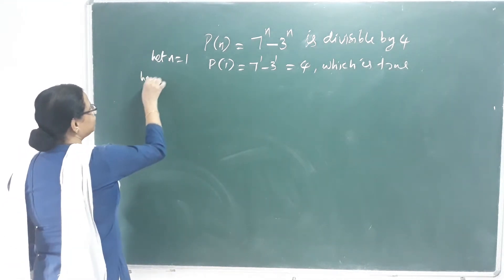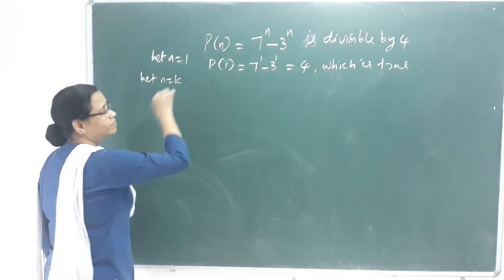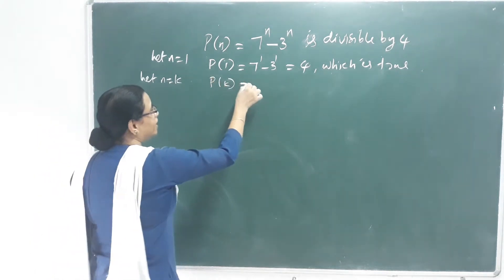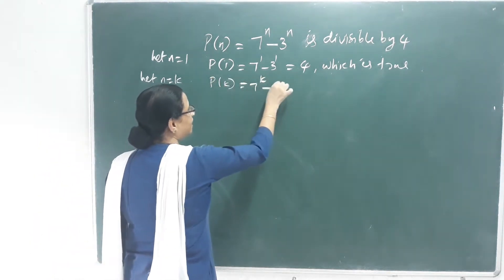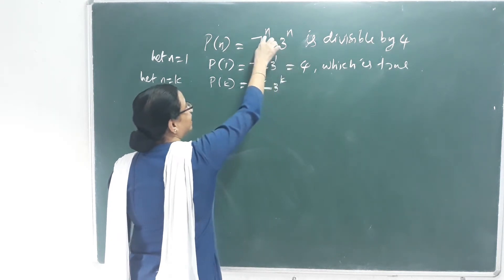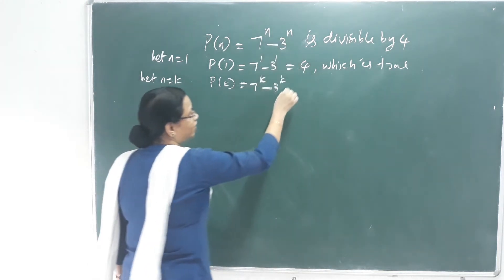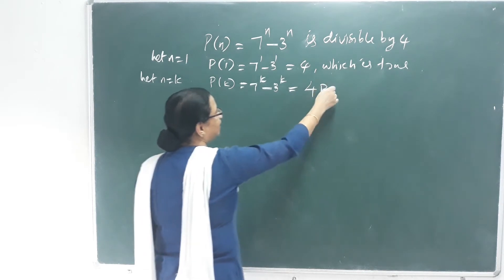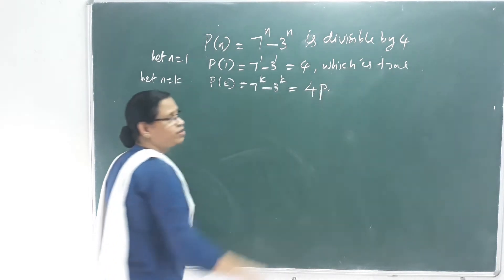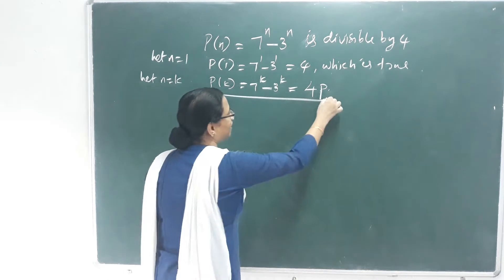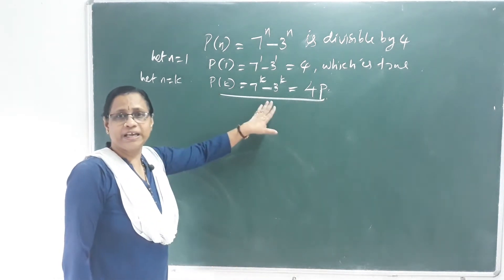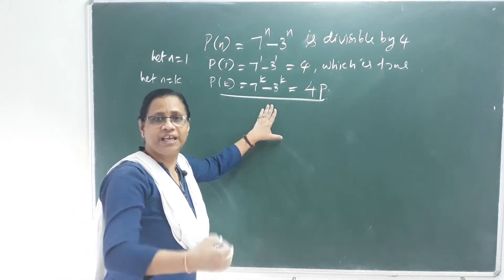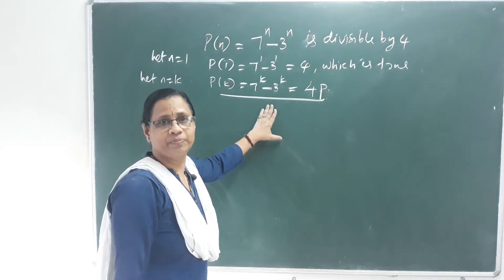Let us assume that n equal to k. Then P of k is equal to 7 raised to k minus 3 raised to k, which equals 4 times some integer p. I have underlined this step.